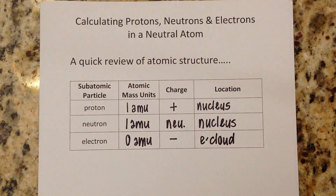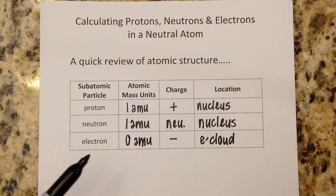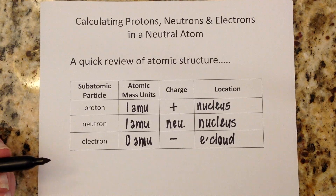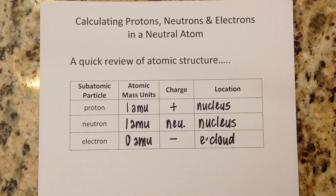You've heard me use the term relative mass a couple times, or relatively speaking. When we're looking at an atom, your proton and your neutron are the two larger particles in that atom. Electrons are just super tiny — they're so small that relative to the size of the atom, we generally just say they have a mass of zero. Technically, electrons do have a mass, but when we're looking at calculating protons, neutrons, and electrons, we kind of ignore that mass of the electron.